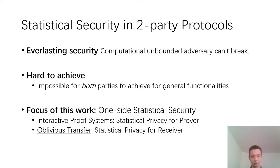We study two specific cryptographic protocols. The first is interactive proof systems, where we care about statistical privacy for the prover. The second is oblivious transfer, where we care about achieving statistical privacy for the receiver.